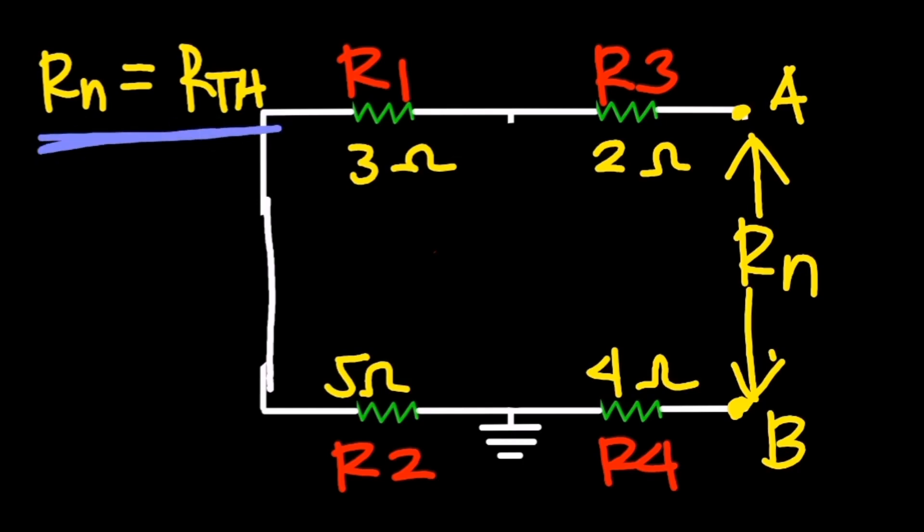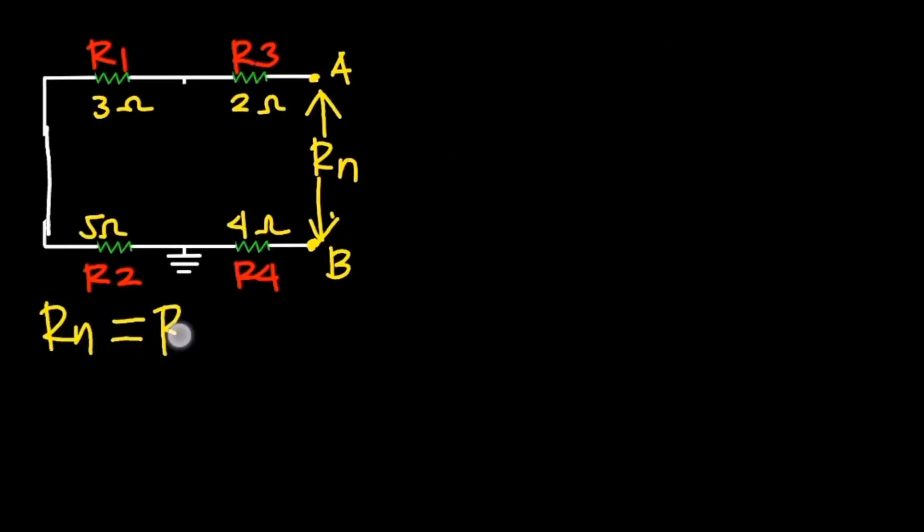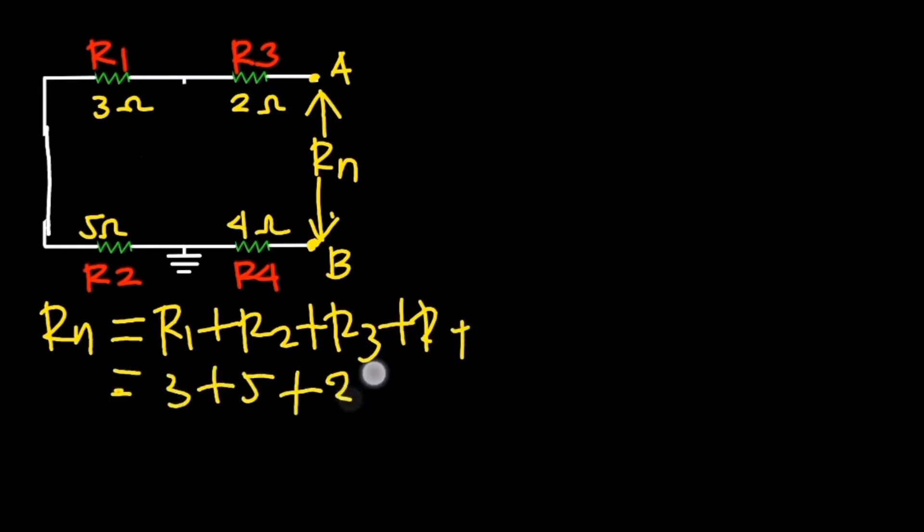So Rn equals R1 plus R2 plus R3 plus R4. Substituting the values of resistors, Rn equals 3 plus 5 plus 2 plus 4, which will result in 14 ohms.